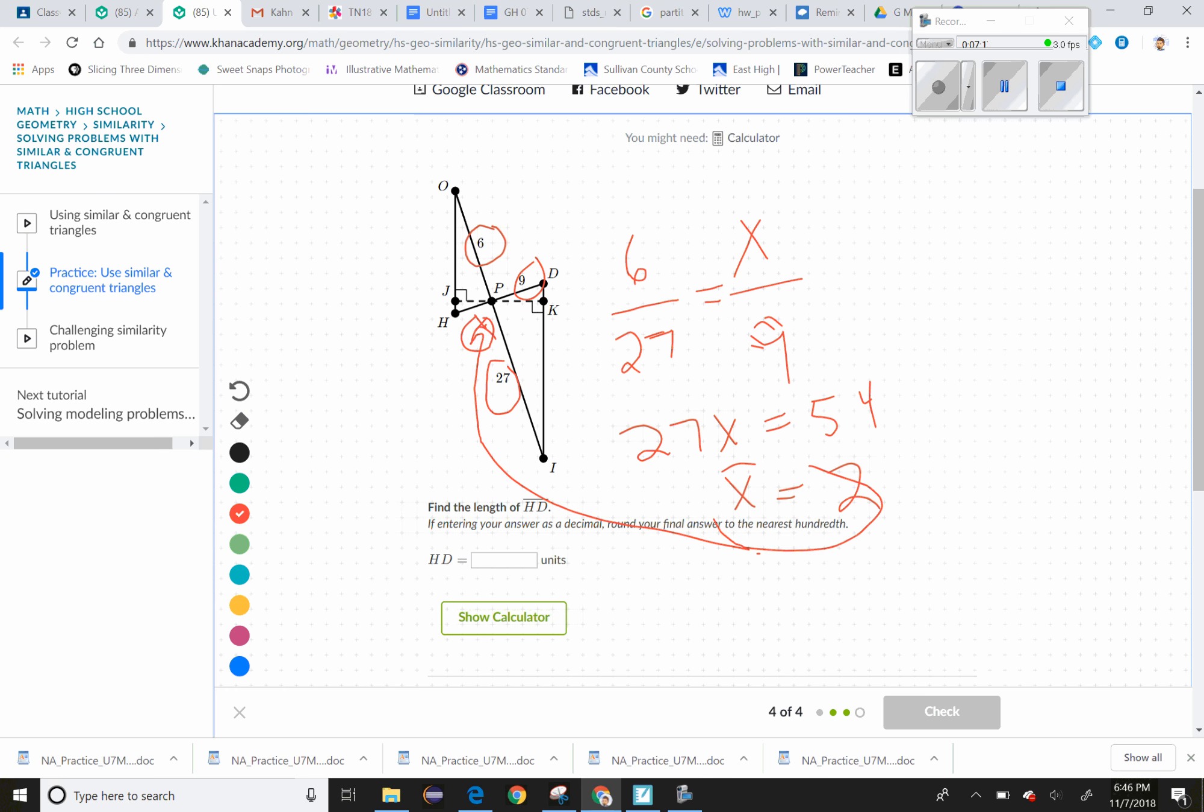that's what's going there, so HD is just gonna be 9 plus 2, which is 11. Okay, I hope that helped a little bit. I'll try to maybe post up videos for the other two things.